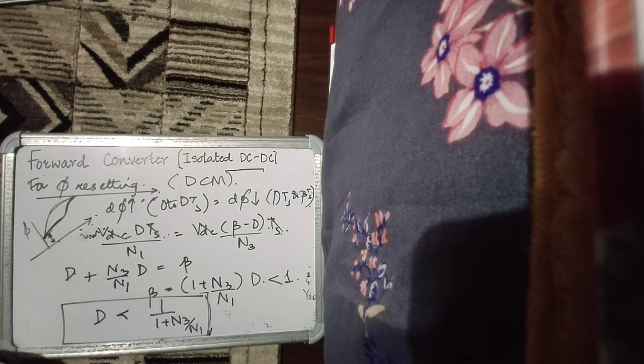The forward converter has unidirectional flow of magnetizing current and hence unidirectional core excitation. With this we complete two important isolated DC-to-DC converter circuits: the forward converter and the flyback converter. For the midterm, this material is relevant for both MTech and BTech students, though for masters it is in the midterm syllabus and for bachelors it is not. Thank you.